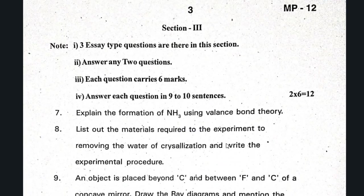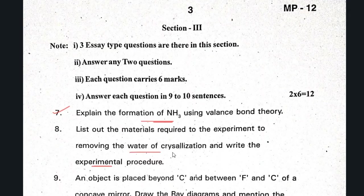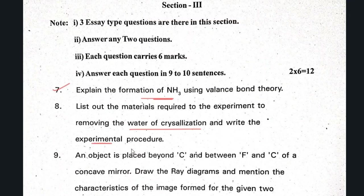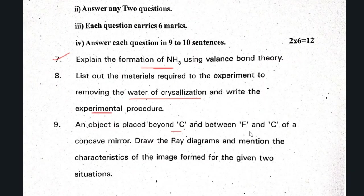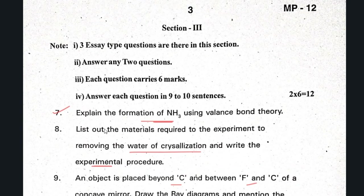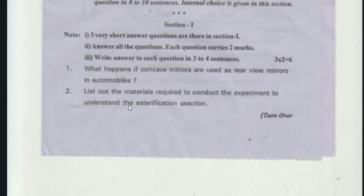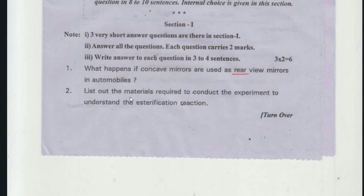Section 3 is the choice section — only choice. Formation of NH3 using valence bond — diagram-related question. Compulsory experiment-related question: water of crystallization. An object is placed beyond C and between F and C of a concave mirror — draw a ray diagram. These are the questions that appeared in previous pre-final question papers.